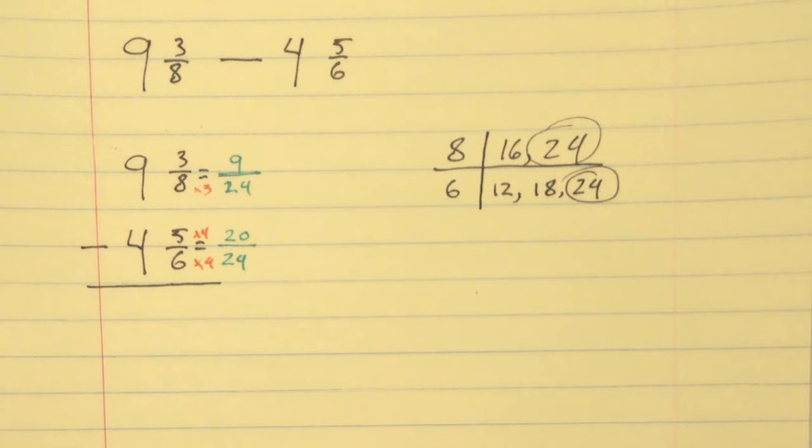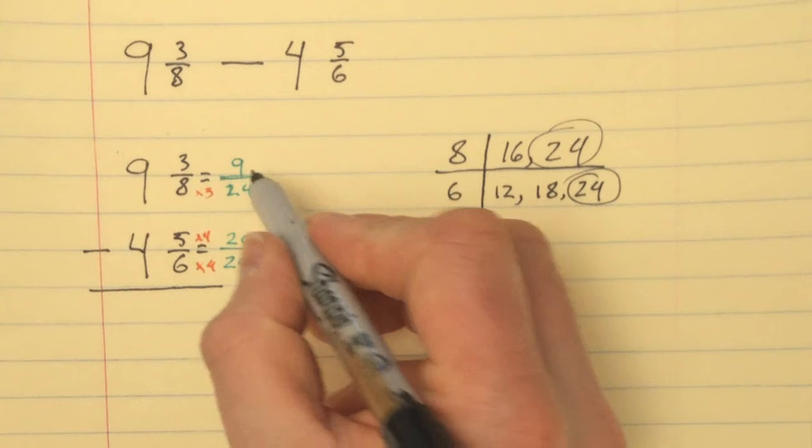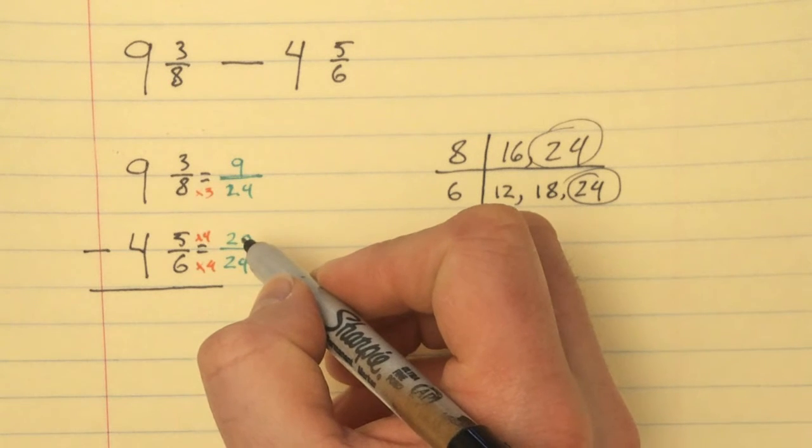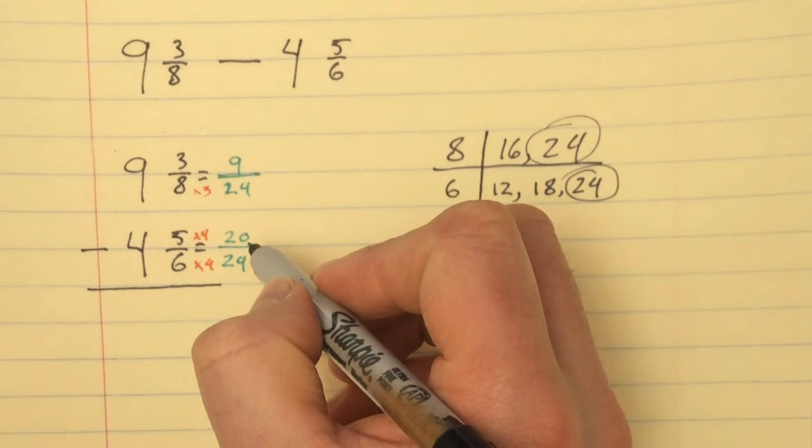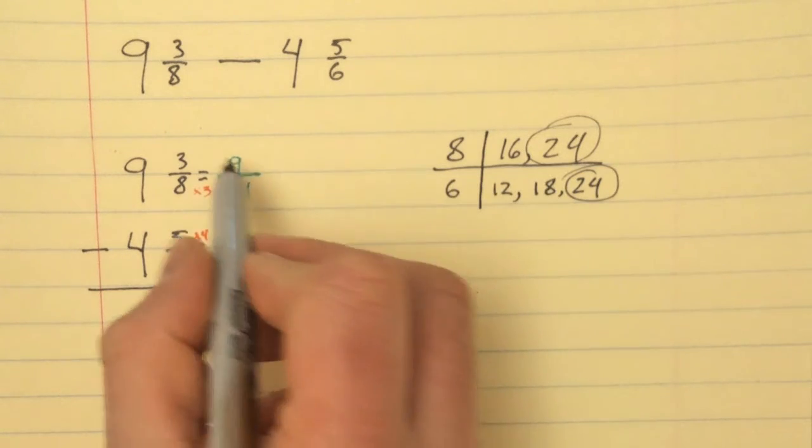So now I can get into the math. All right, so let's make it happen. Nine minus twenty, you cannot do, so we have to regroup. Which in the previous video we talked about, regrouping is, we know this